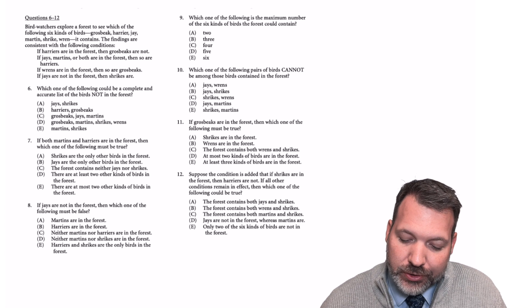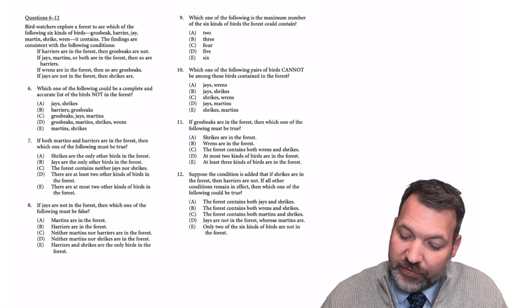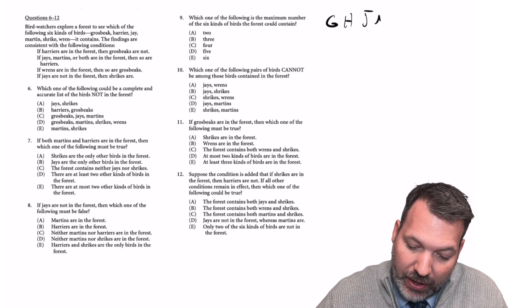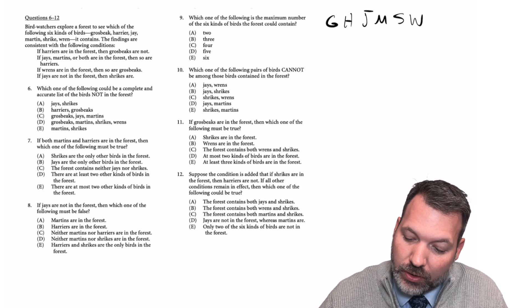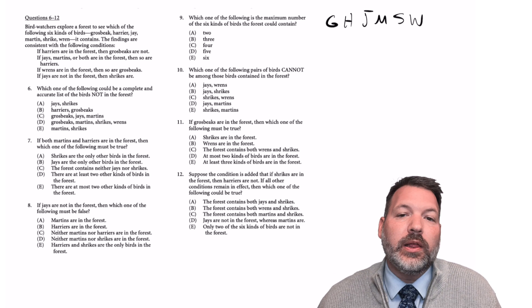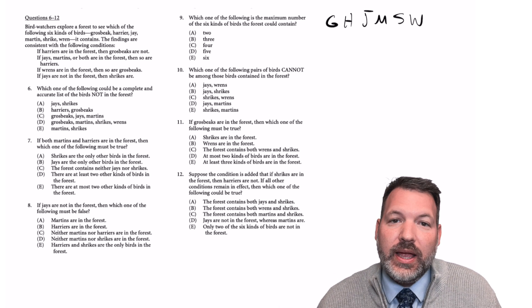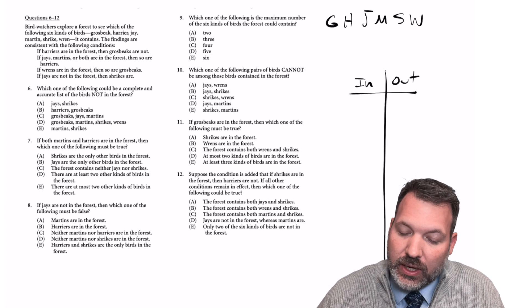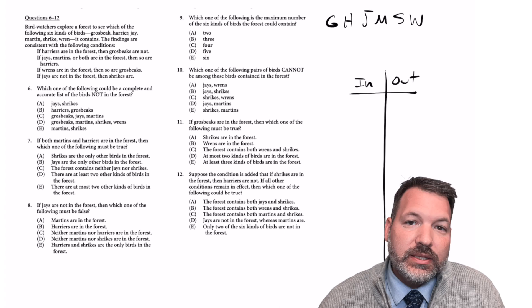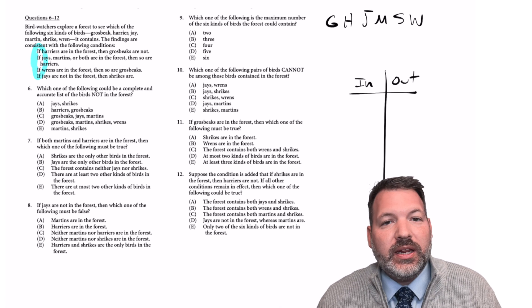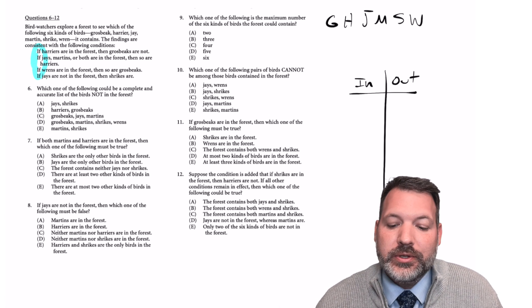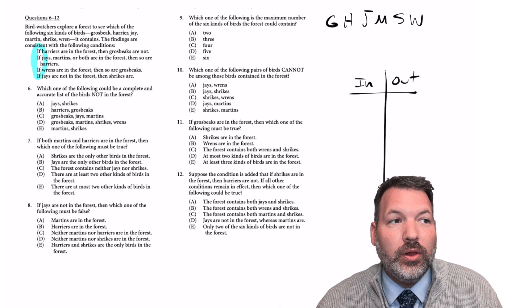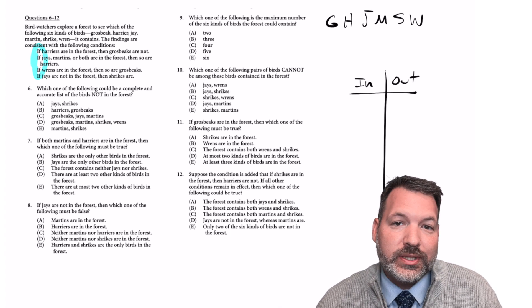Questions 6 through 12, PrepTest 33, Game 2. Birdwatchers explore a forest to see which of the following six kinds of birds it contains: G, H, J, M, S, and W. The findings are consistent with the following conditions. Classic In-N-Out setup — we're either in the forest or out of the forest. Let's set up our diagram with an inside and an outside. As I scan the clues, I can see they are entirely conditional statements, which is typical of In-N-Out games.